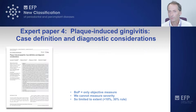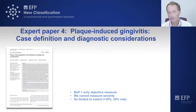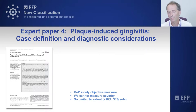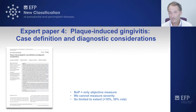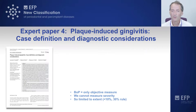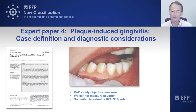We went with what we call the 30% and the 10% rule for defining extent. If 10% or more of sites were bleeding, we said that patient had localized gingivitis. If 30% or more of sites were bleeding, the patient would have generalized gingivitis. Less than 10% of sites bleeding in an intact periodontium — where there is no attachment loss and no bone loss at all — was regarded as compatible with clinical gingival health.